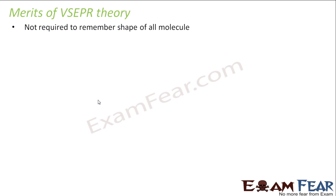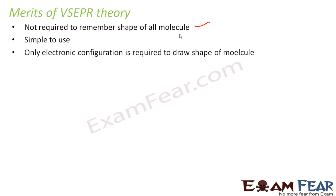There are some merits of VSEPR theory. The first thing is you do not need to remember the shapes of all the molecules. You just need to know how to find the Lewis structure, and then if you have a little bit of knowledge in VSEPR theory, you can find the shape. It is very simple to use, and only the electronic configuration is required to draw the shape.